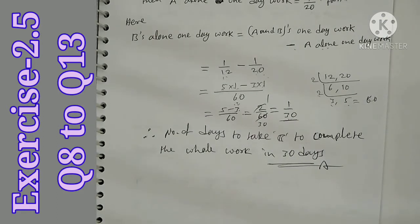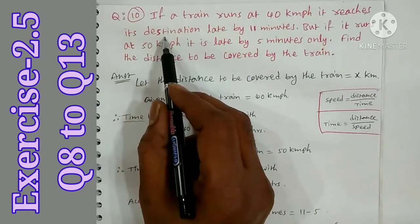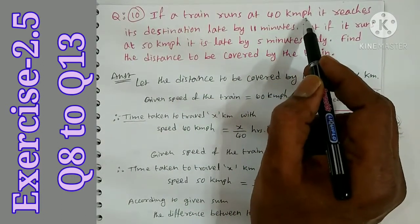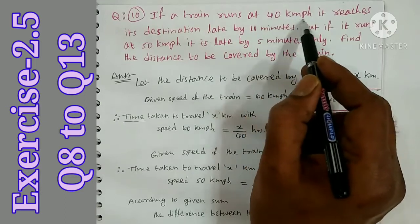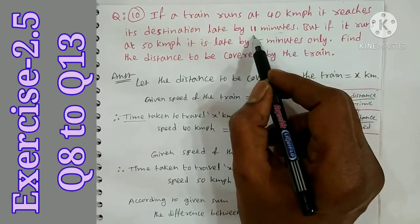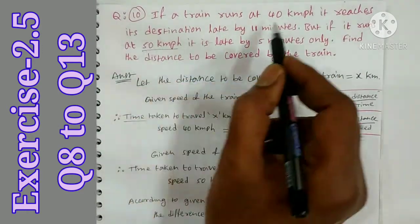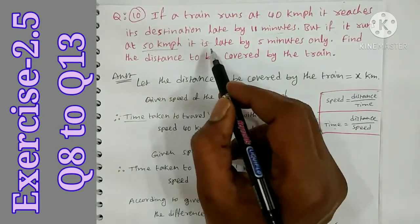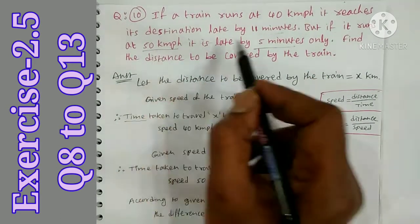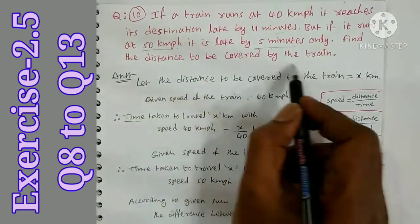Question 10: If a train runs at 40 km per hour, it reaches its destination late by 11 minutes. We need to find the distance to be covered by the train using the formula speed equals distance by time.